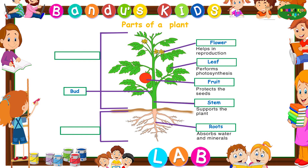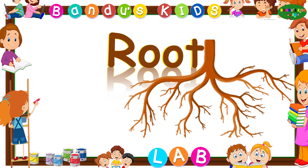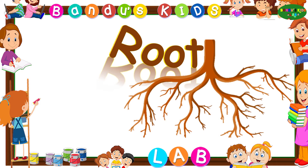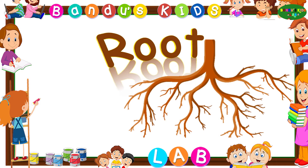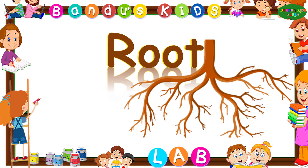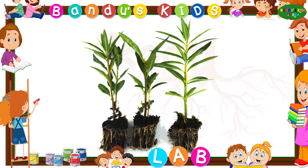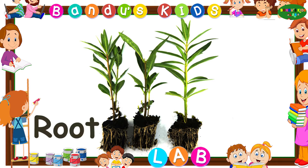There are two main parts of a plant. They are root and shoot. Root — R-O-O-T — root.